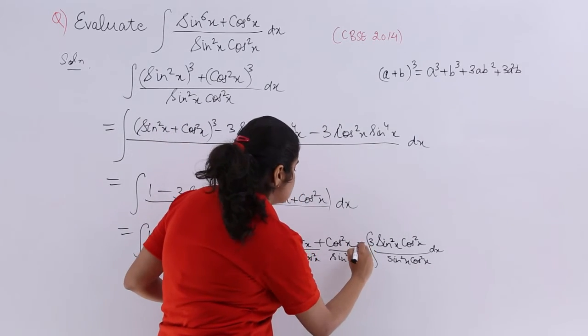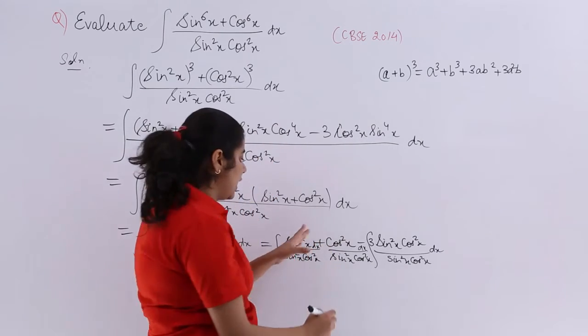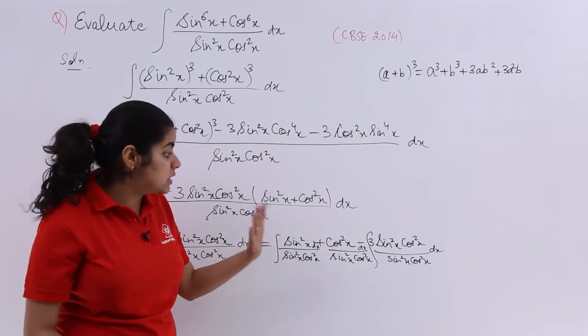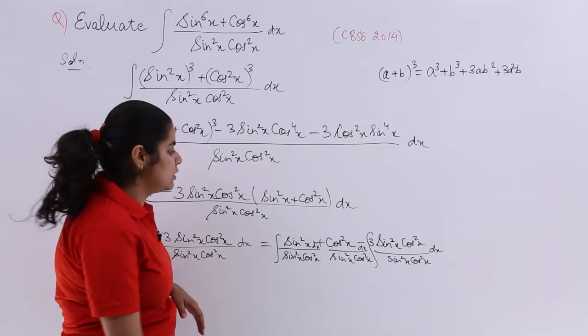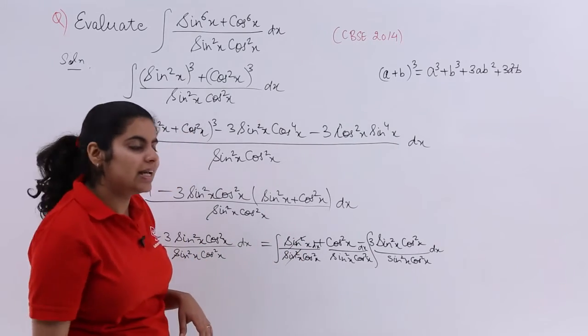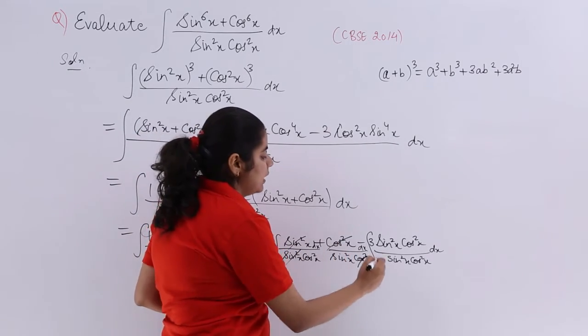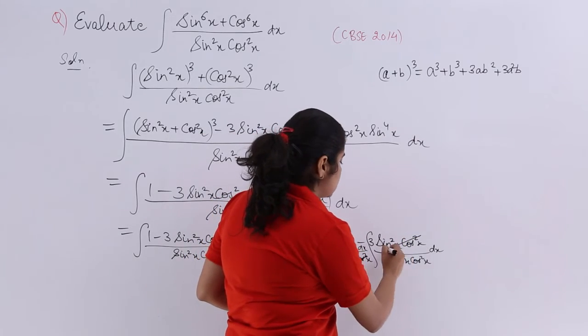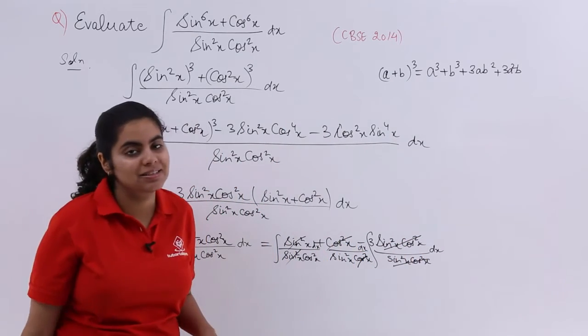Always you will integrate with respect to dx. Now see, certain things would cancel and it is very easy for us to solve. Sin square getting cancelled with sin square, cos square getting cancelled with cos square, and sin square cos square as a whole getting cancelled here.